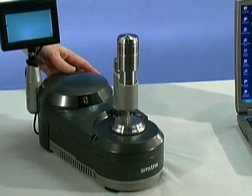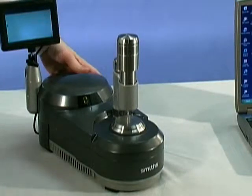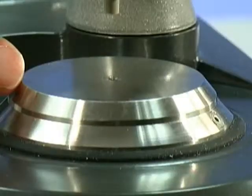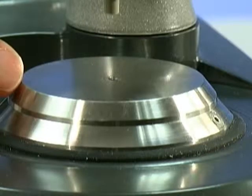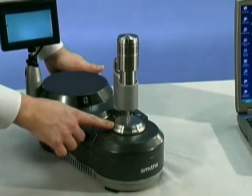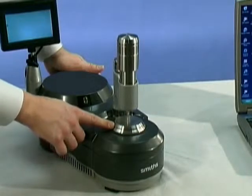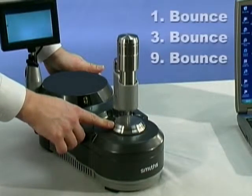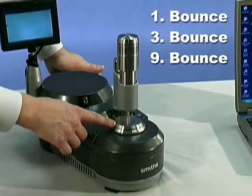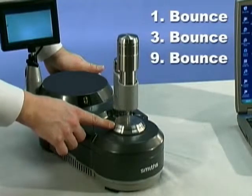In the front of the unit is the DuraDisc sample interface. This is a diamond ATR integrated into the system. The diamond ATR sampling interfaces come in three versions: a one bounce, three bounce, and nine bounce DuraDisc available for the system.